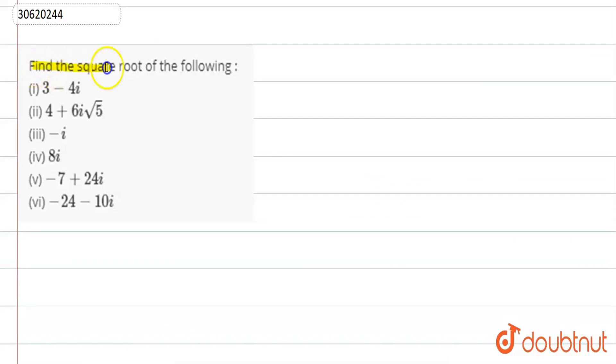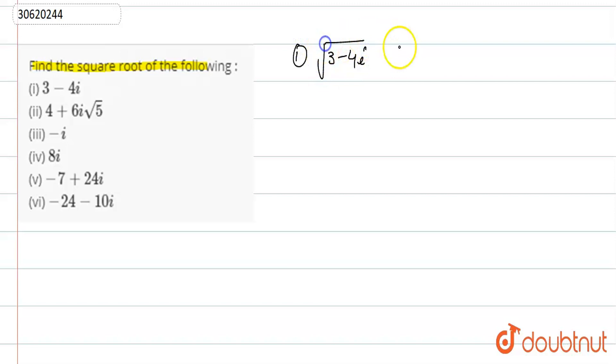In this question, we have to find the square root of the following. Here we have six parts. First is the square root of 3 minus 4i. This is our square root.